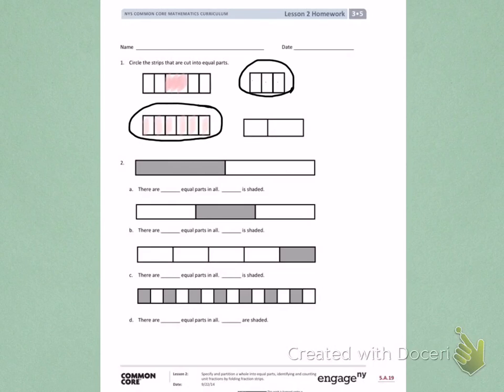Look at the last picture yourself and decide if those sections are equal. If they are, circle them. If not, do not circle them.